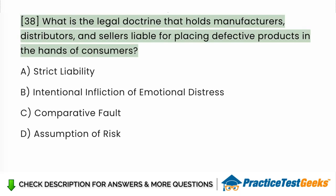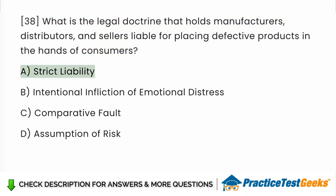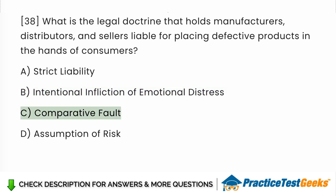What is the legal doctrine that holds manufacturers, distributors, and sellers liable for placing defective products in the hands of consumers? a. Strict Liability. b. Intentional Infliction of Emotional Distress. c. Comparative Fault. d. Assumption of Risk.